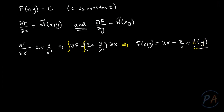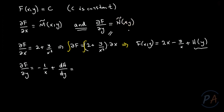I don't know h(y) yet, but I can determine it using the other equation: ∂F/∂y = Ñ(x,y). Computing ∂F/∂y: the derivative of 2x is zero, and the derivative of -y/x is -1/x, plus dh/dy. This equals Ñ(x,y) = y - 1/x.